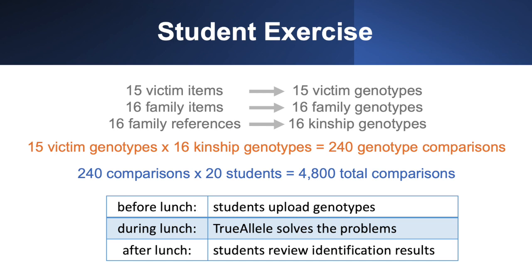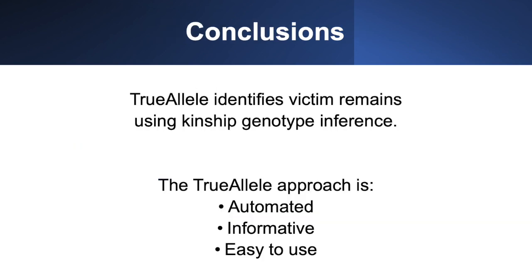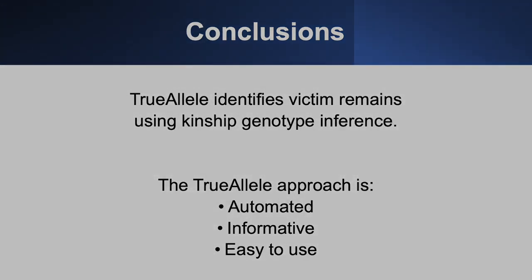What we saw from that was that with very little training — the students had only had the software for maybe a couple hours that week, and this day only took a couple hours — anyone could solve this problem. In conclusion, we showed that TrueAllele was able to identify the victim remains in this bus crash using kinship genotype inference. It inferred those kinship genotypes from the family members and automatically compared those with the victim remains using an automated database. It gave the log of the likelihood ratio, so we could see statistically how these genotypes are associated, and as our student exercise showed, this is very easy to use. If there is a need, we're here to help. Thank you.